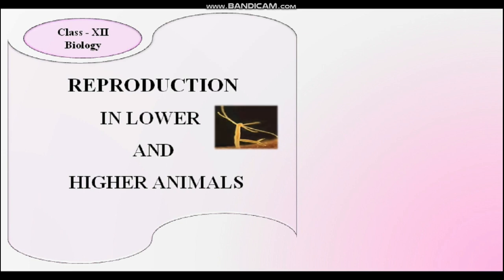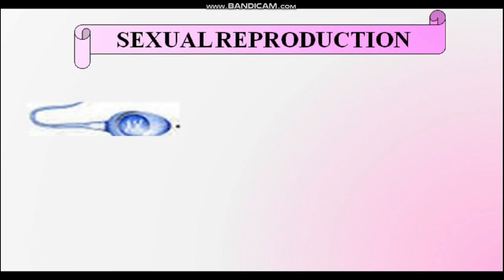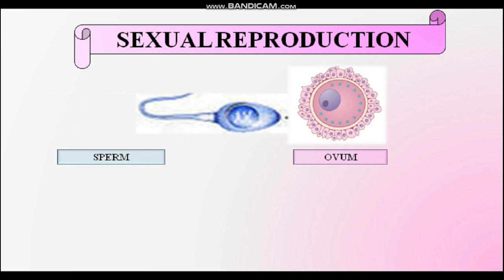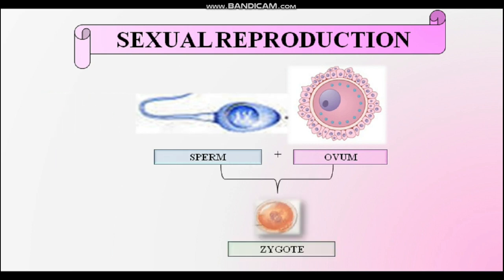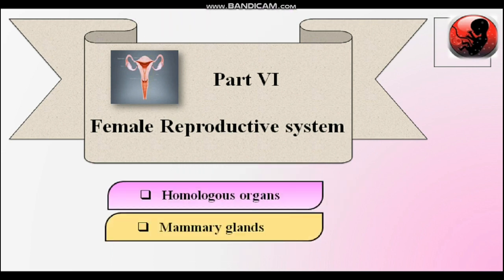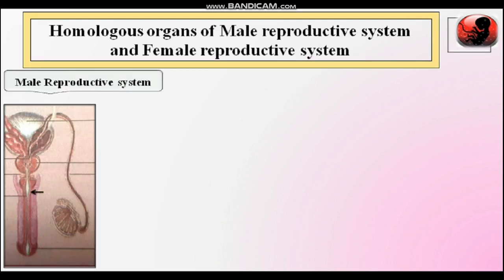Welcome students. We are still in the topic of reproduction in lower and higher animals. We are in the topic of sexual reproduction in human beings — fusion of sperm and ovum gametes which results in the formation of a zygote. Now we come to Part 6: the female reproductive system. The remaining part includes homologous organs and mammary glands. In the previous lecture, Part 5, we already studied the external and internal genital organs in the female.